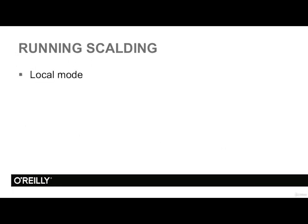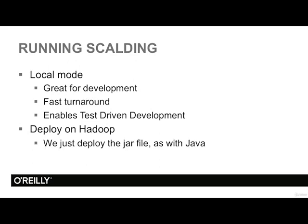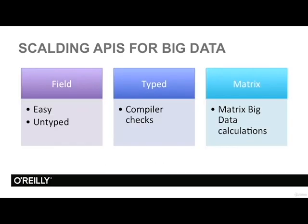How do we run Scalding? There are two modes. Local mode runs on your machine — great for development with very fast turnaround times and enables test-driven development where we can write unit tests and improve program reliability. When done with development in local mode, we deploy our programs on Hadoop. The nice thing is that we deploy a JAR file as we would with completely ordinary Java programs. From the point of view of MapReduce and Hadoop, there are no differences between a Scala program and a Java program.